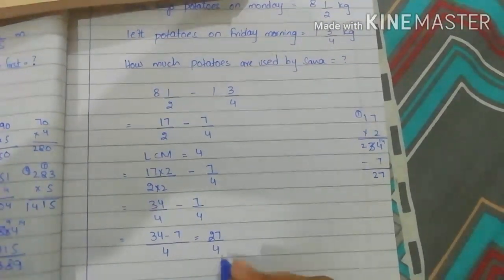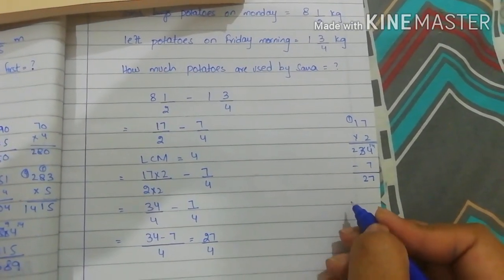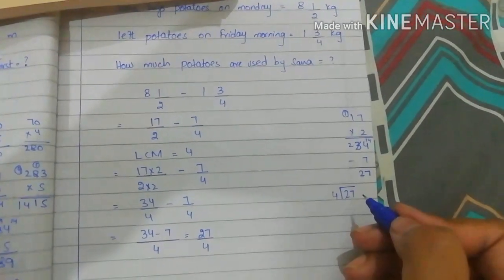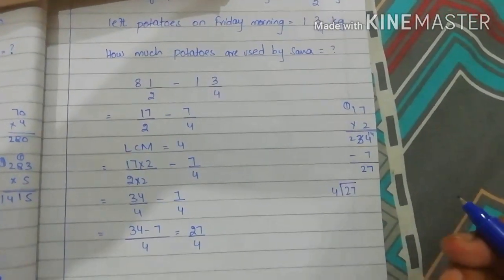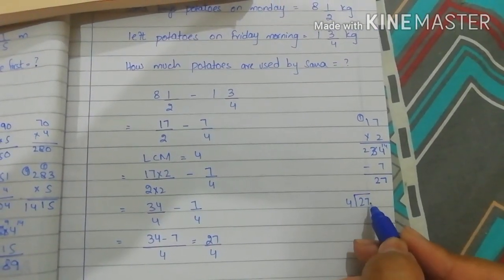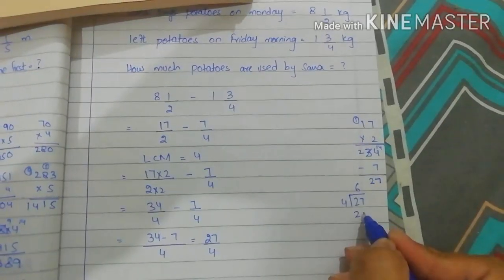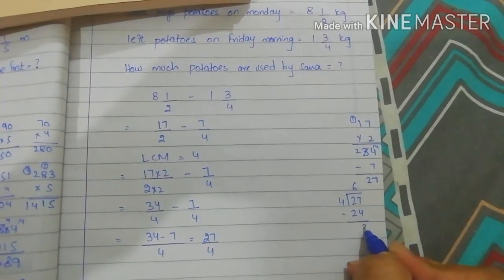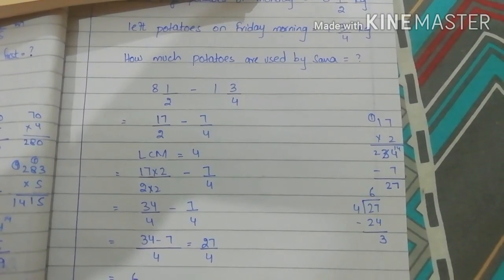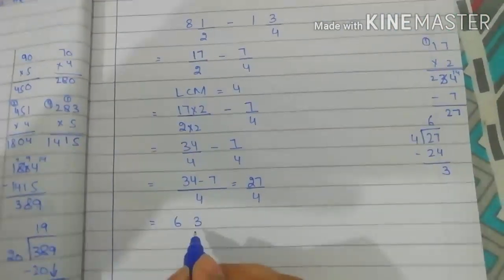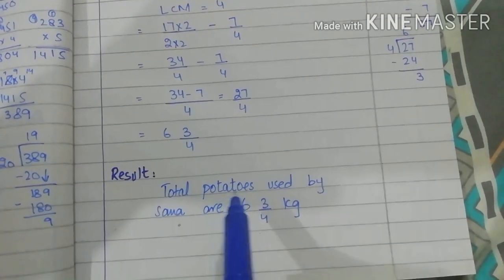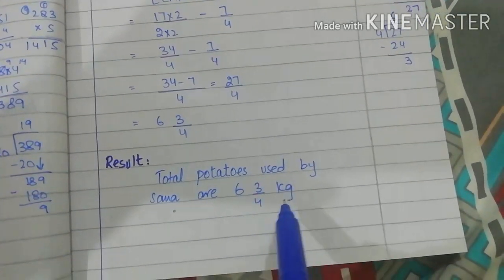27/4 is an improper fraction, so we convert to a mixed number. Dividing 27 by 4: 4×6=24, remainder 3. The answer is 6 whole 3/4. The result: total potatoes used by Sana are 6 whole 3/4 kg.